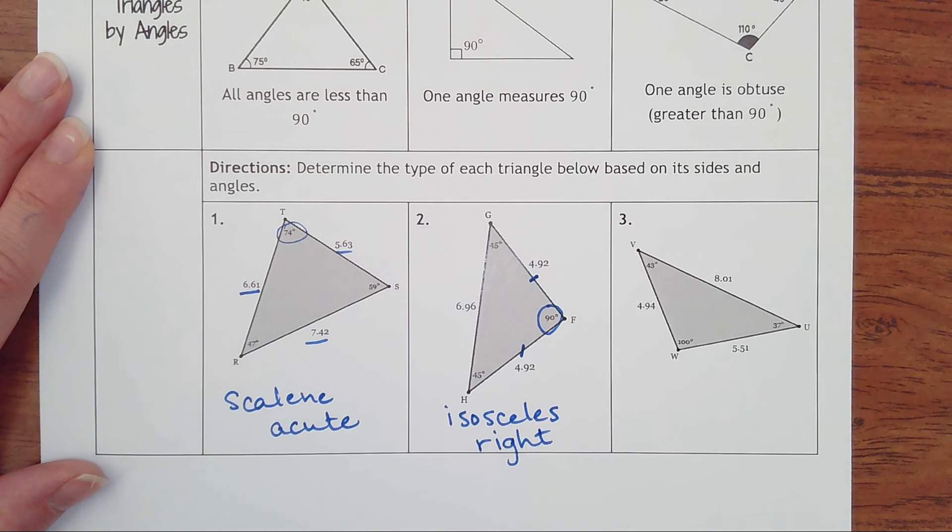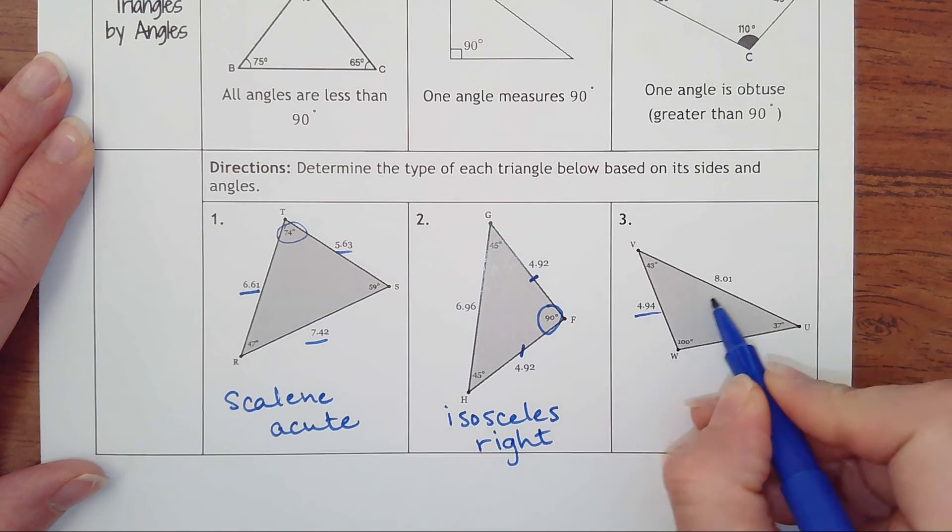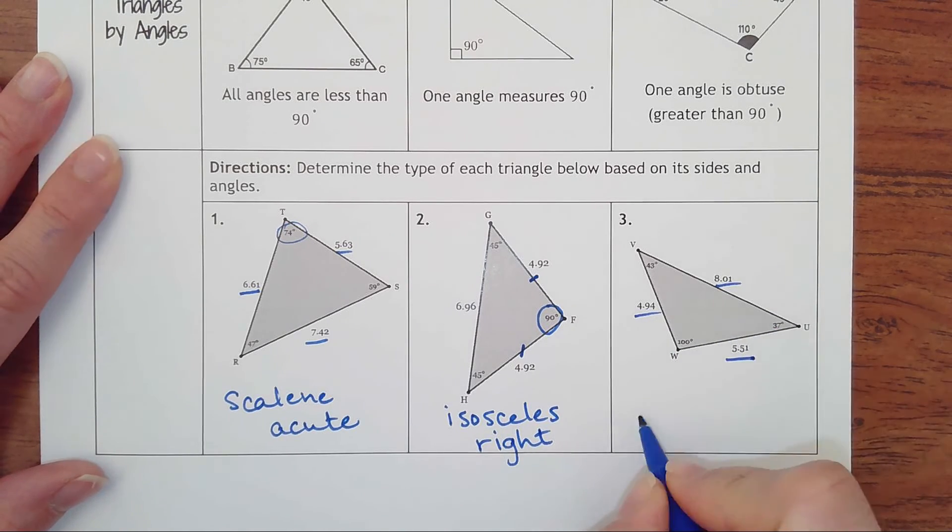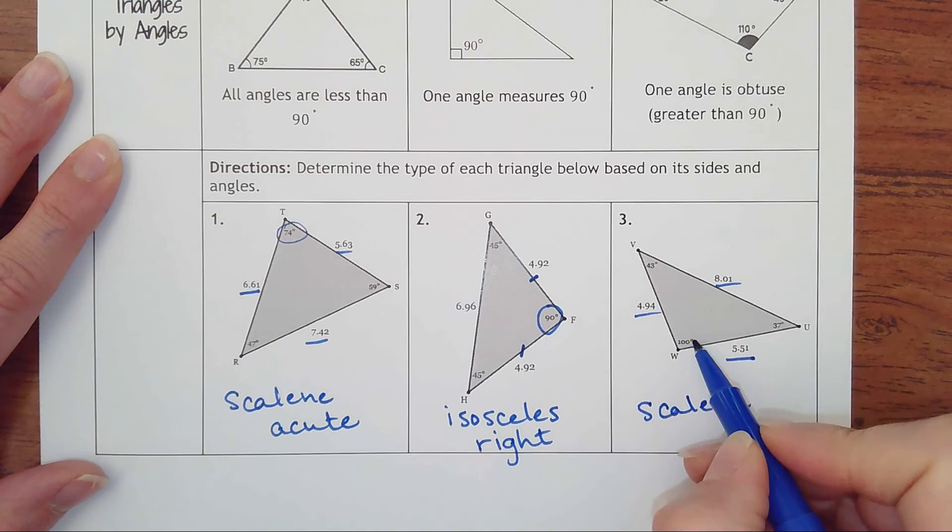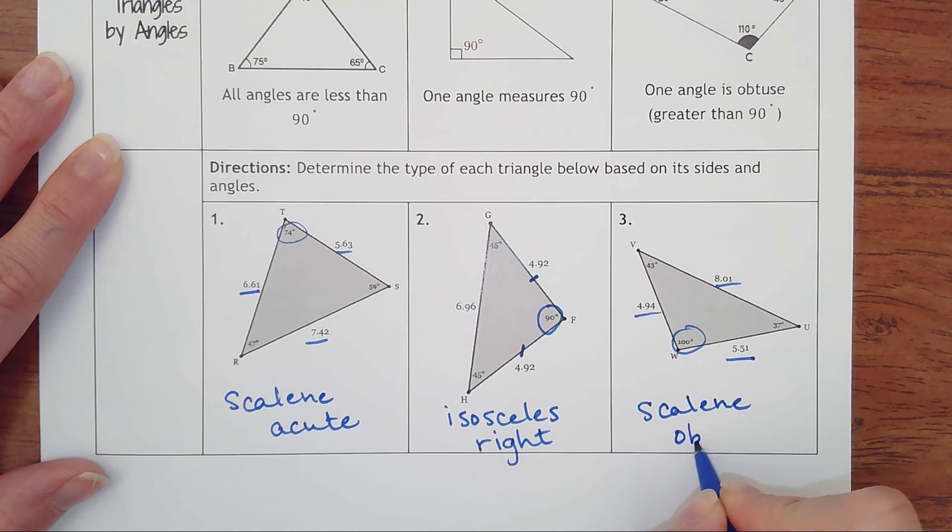And number three, we have three different side lengths. That makes it scalene. And our biggest angle is this 100 degrees, which would be obtuse. So I did not include an equilateral, but let's just kind of talk about that for a minute.